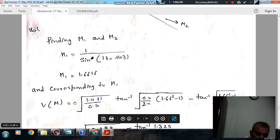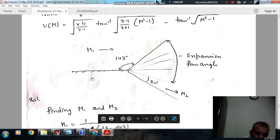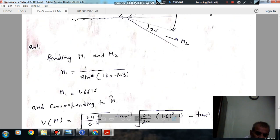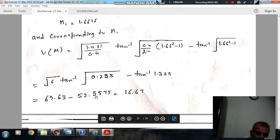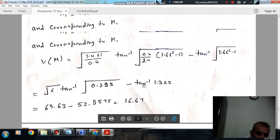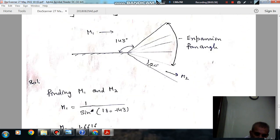Corresponding to M1, the v(M) is found by putting the value in the given expression. Gamma is 1.4 and M is 1.66, so we get the value as 16.67.